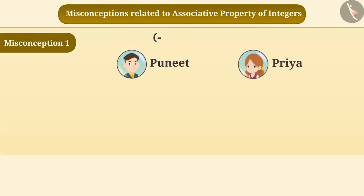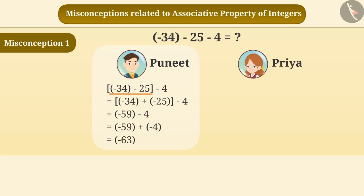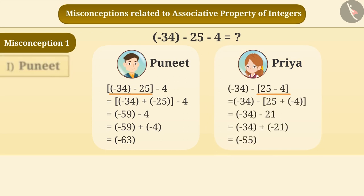Puneet and Priya have to find the value of the subtraction of minus 34, 25 and 4. Puneet has solved it by making a group of minus 34 and 25 and obtained the result minus 63. Priya has solved it by making a group of 25 and 4 and obtained the result minus 55. Tell me who is correct.